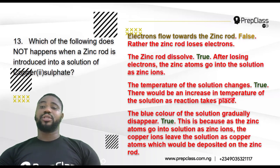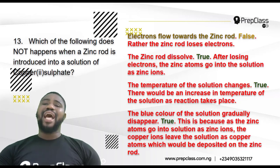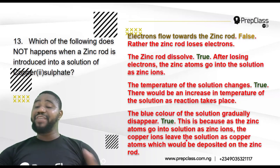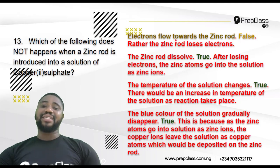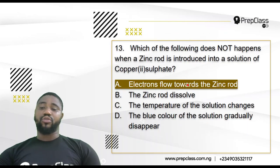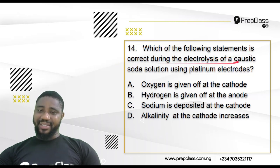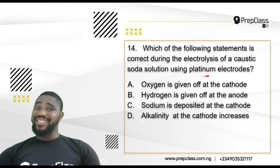Option C — the temperature of the solution changes. That is true; there will be an increase in temperature of the solution as the reaction takes place. Option D — the blue color of the solution gradually disappears. That is true, because copper ions leave the solution as copper atoms deposited on the zinc rod, causing the blue color to fade. So the correct answer is option A — electrons flow towards the zinc rod — this does NOT happen.